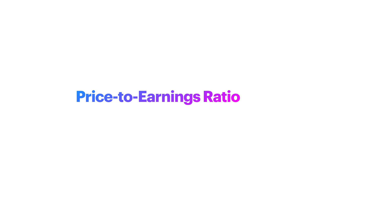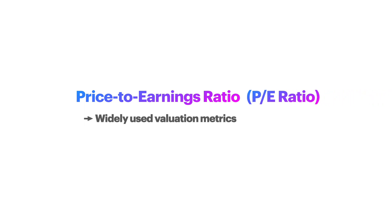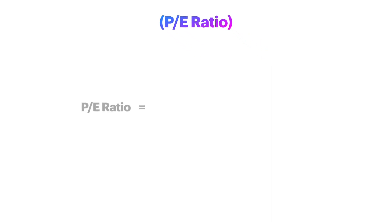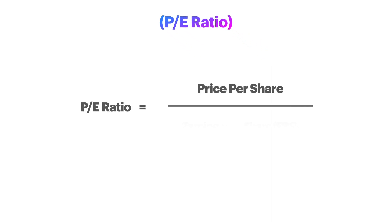In this video we will be discussing the price-to-earnings ratio, also known as the P/E ratio. It is one of the most widely used valuation metrics and is commonly referred to as an earnings multiple. The P/E ratio compares a company's price per share to its earnings per share, or EPS.